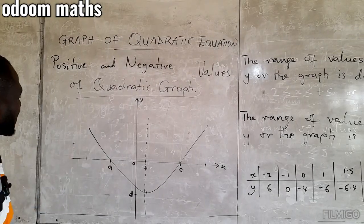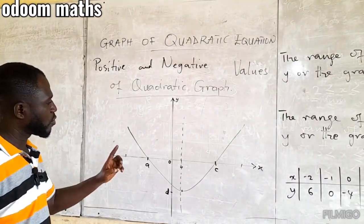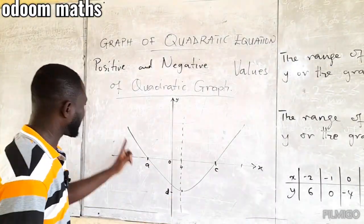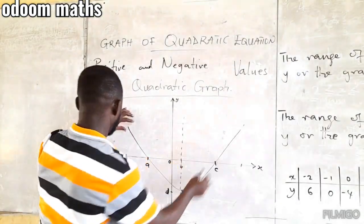Per our graph, the range of values of x for which y, that is the graph, y is positive. There are two. One is here, then one is also here.